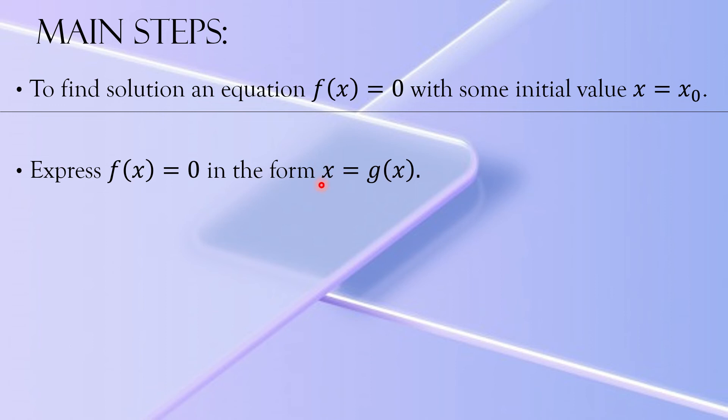Then we will check whether these iterations are converging or not. For that purpose, for an initial value of x₀, we will be checking whether |g'(x₀)| < 1. If this is less than 1 for a certain representation, because you can have different type of representation for one equation f(x) = 0, that's x = g(x).